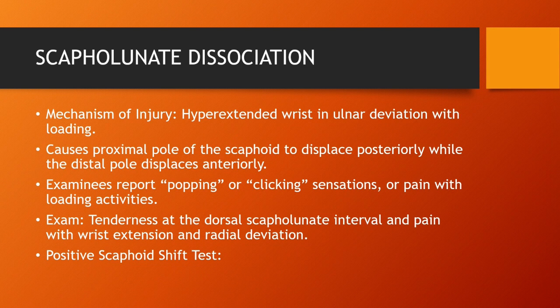By physical exam, the examinee will report tenderness at the dorsal scapholunate interval, with pain on both wrist extension and radial deviation. The provocative maneuver to test for scapholunate dissociation is known as the Watson test, also known as the scaphoid shift test. To understand this test, it's important to know that the proximal row of carpal bones — scaphoid, lunate, triquetrum, and pisiform — moves as a group into flexion as the wrist moves into radial deviation, and then reverses into extension as the wrist goes into ulnar deviation.